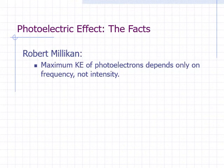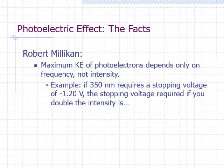Robert Millikan found that the maximum kinetic energy of the photoelectrons depends on the frequency of the light, but not on the intensity. For example, if a 350 nm radiation requires a stopping voltage of negative 1.20 volts, what stopping voltage would be required if you double the intensity?